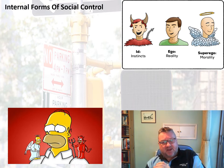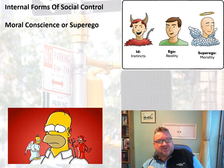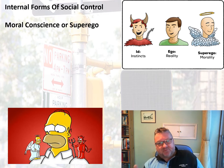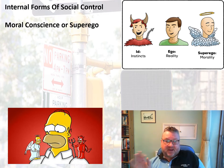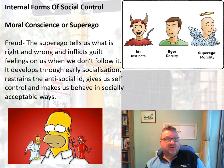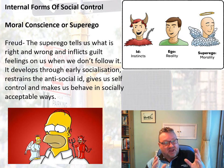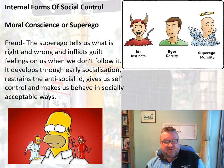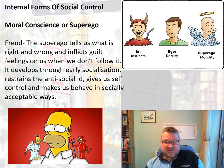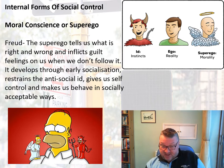Let's start with internal forms of control. One of these is our moral conscience — or, as we've looked at with Freud in individualistic theories of criminality, what Freud would call the superego. The superego tells us what is right and wrong and makes us feel guilty when we don't follow it. Freud believed it developed through early socialisation, that the superego restrained the anti-social id, gave us self-control, and made us behave in socially acceptable ways. The guilt our superego gives us stops us from committing criminal acts — it's internal, coming from within us.